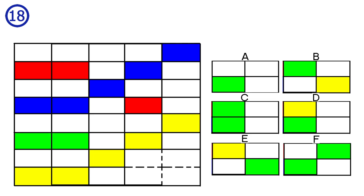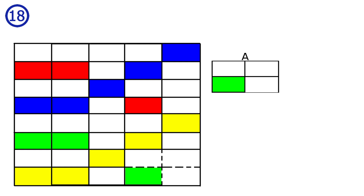Puzzle number 18. This is a really easy puzzle. The top half is the same as the bottom half, just in different colors. So there should be a green tile in the bottom left of the answer, matching answer A. Answer A is correct.